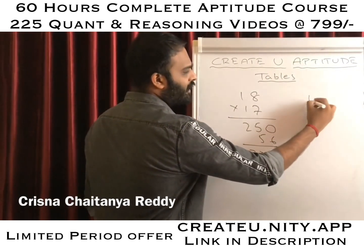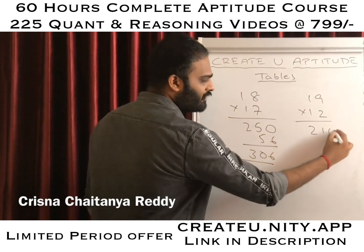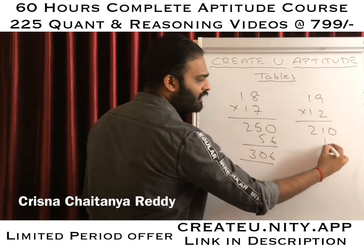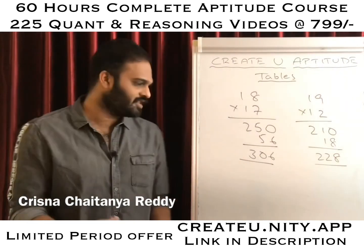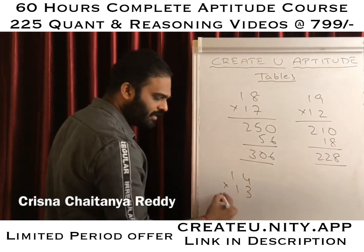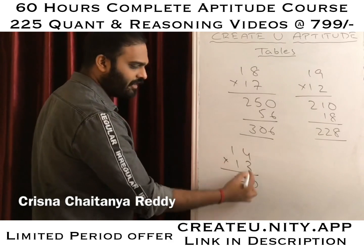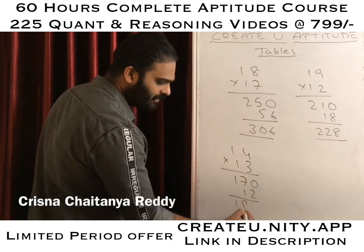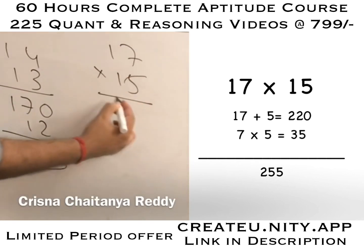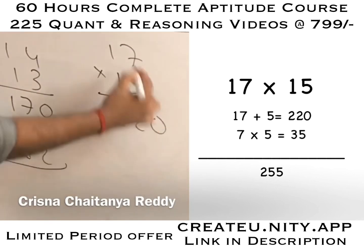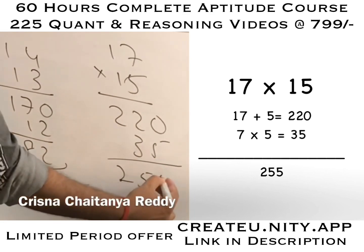If the question is 19 into 12: 19 plus 2 is 21, so I say 210, and 9 times 2 is 18. So my answer will be 228. The question can be 14 into 13 — the concept is the same. 14 plus 3 is 17, I say 170. 4 times 3 is 12. So my answer will be 182. What is the answer for 17 into 15? 17 plus 5 is 22, I say 220. 7 times 5 is 35. So my answer will be 255.